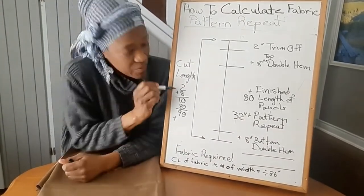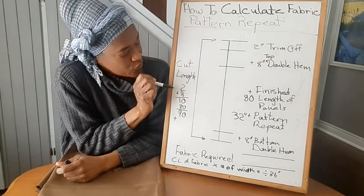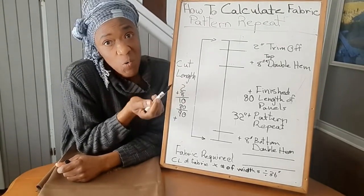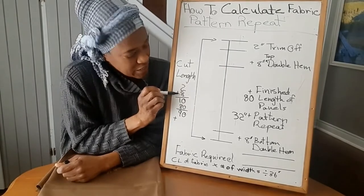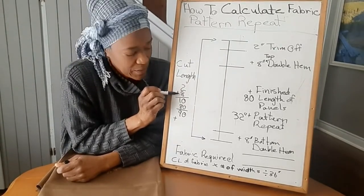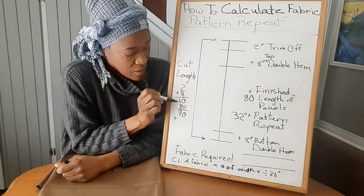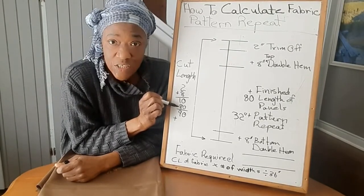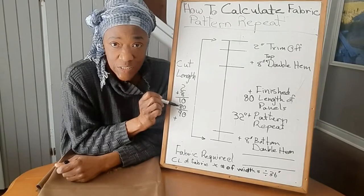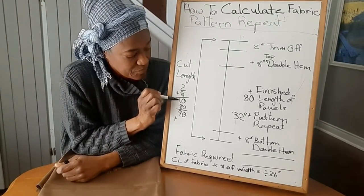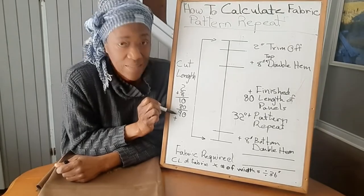So we will go ahead and we will add 32 inches for our pattern repeat. So pattern repeat is 32 inches. I have already started adding the numbers over here. So let's go through them. We have two inches for our trim off or wastage, then we have eight inches for the top double hem, so that's eight plus two equals ten. Then we have 80 inches for our finished curtain panel, so it's 10 plus 80 equals 90.